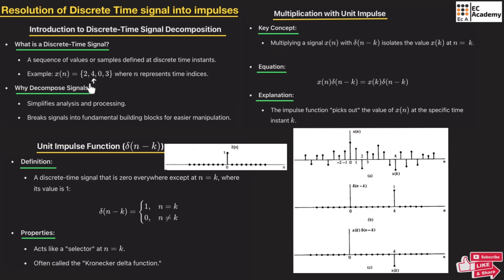Why do we need decomposition of a signal? We need it because it simplifies analysis and processing. It breaks the signal into fundamental building blocks for easier manipulation. So if we have different fundamental blocks, we can easily manipulate them according to our requirement, which is the purpose of signal decomposition.